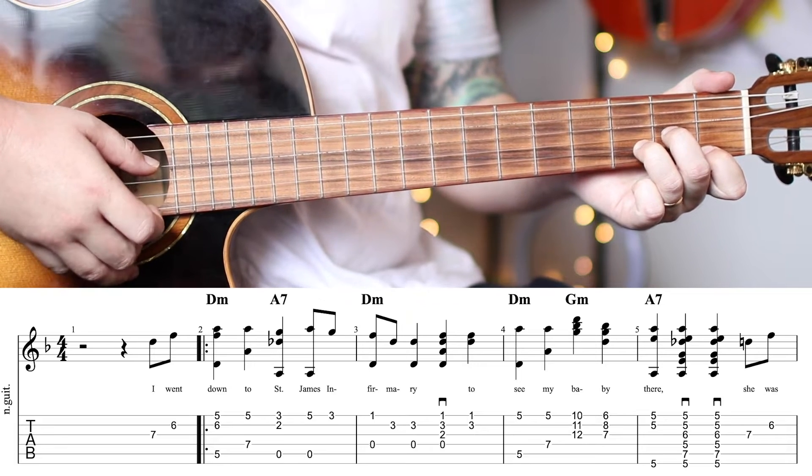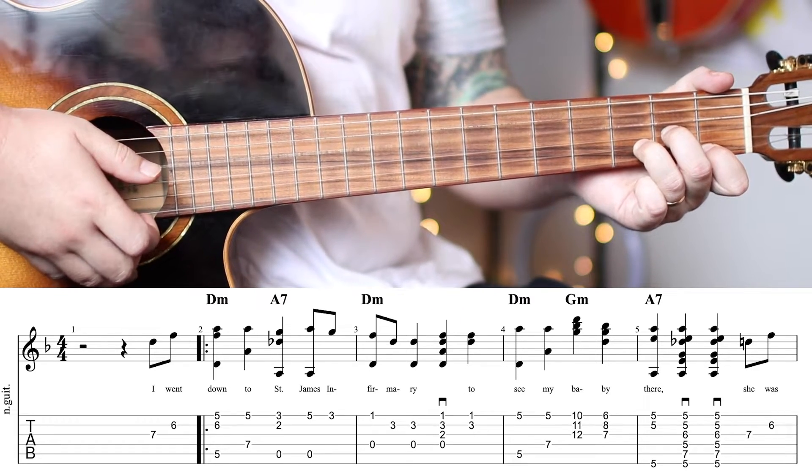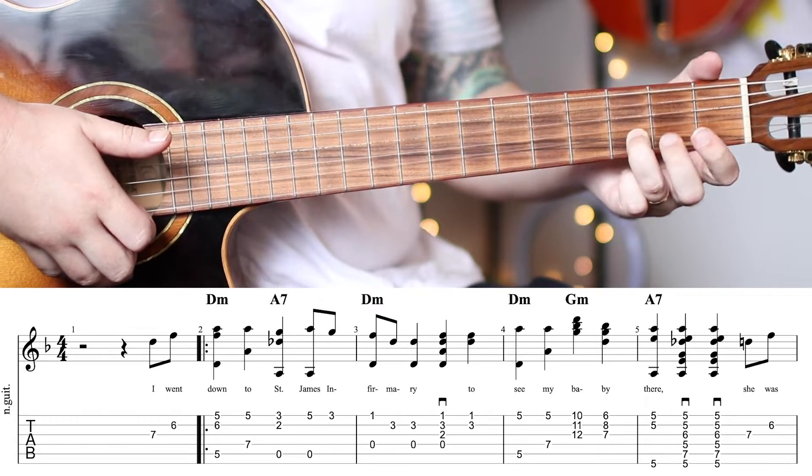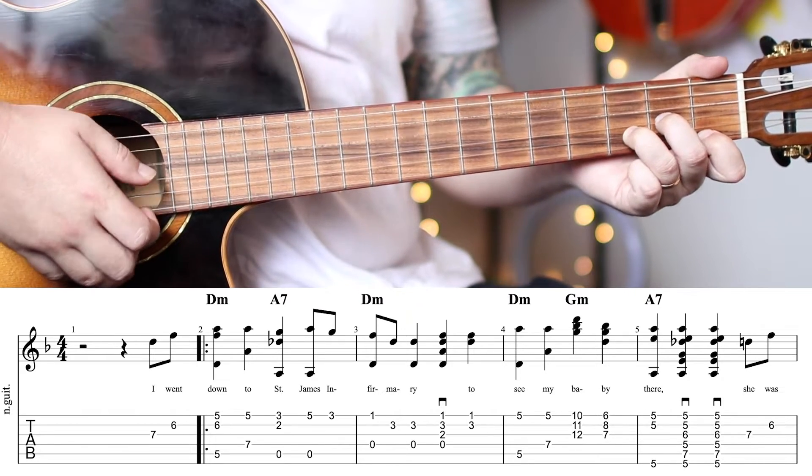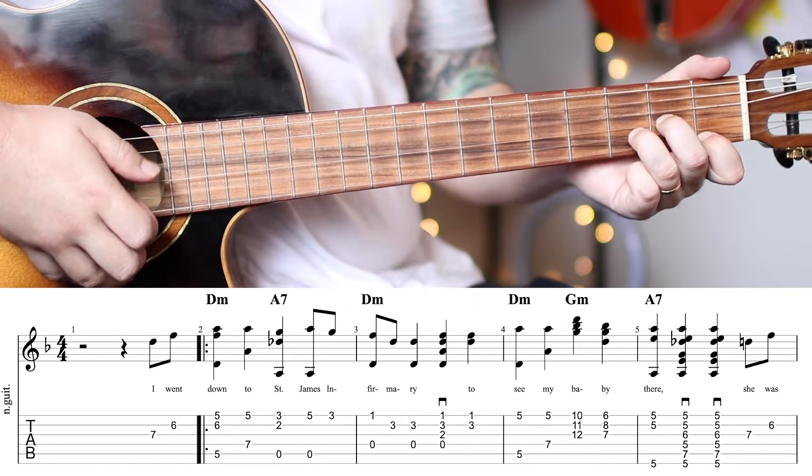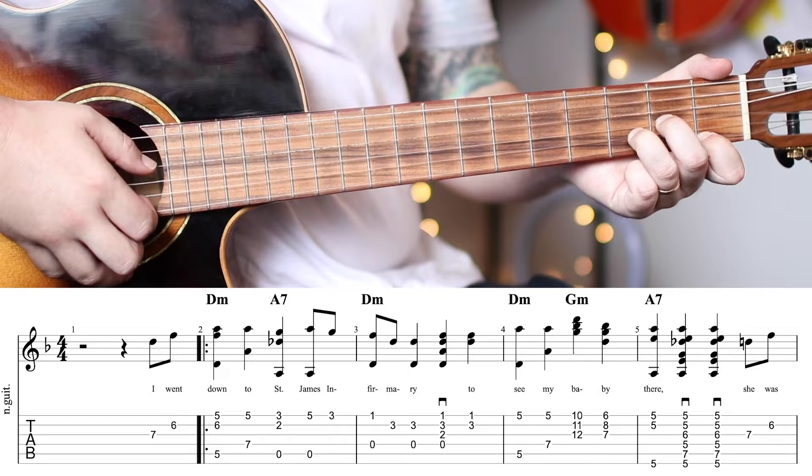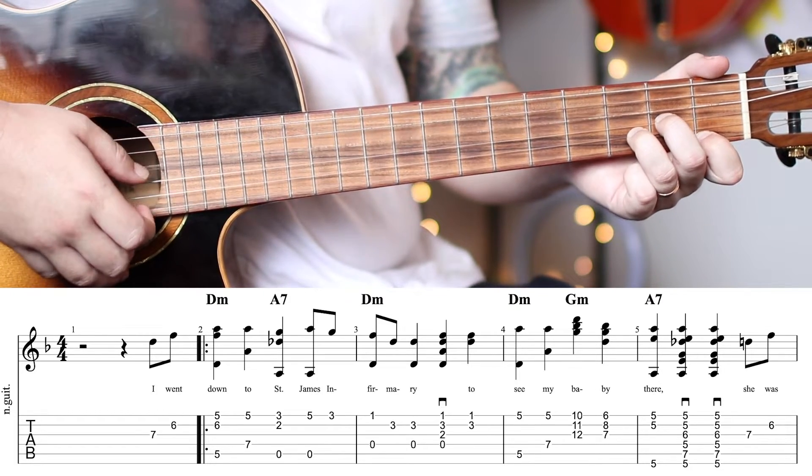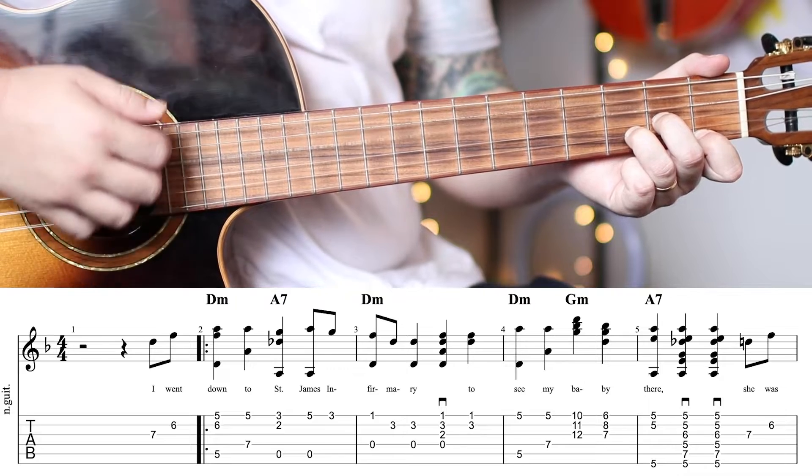Play the open D string, and pinch the 1st fret of the E string together. Then you're going to play just the 3rd fret of the B alone. 1 and. And then you're going to pinch the D and that same note together. 1 and 2. 1 and 2.